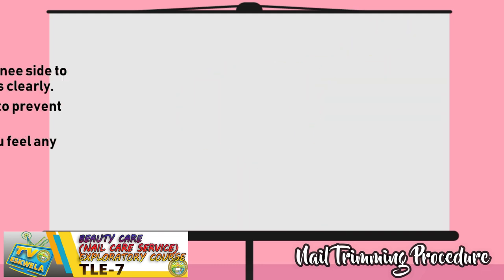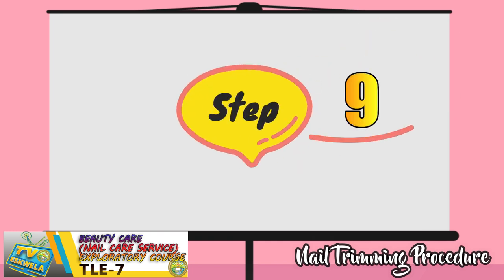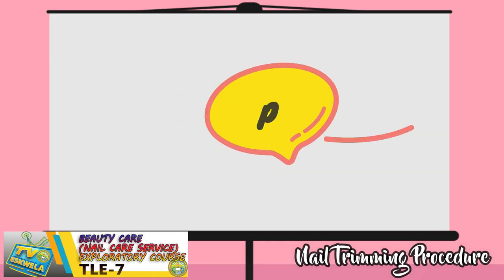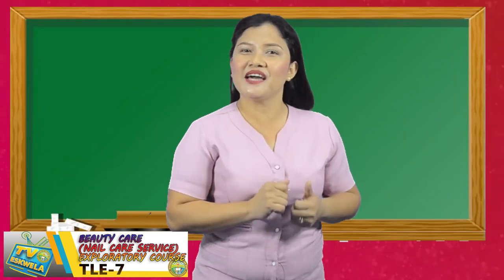Step eight: sit comfortably and crouch your knee to the side to easily reach and see the nails clearly. Be sure not to cut too deep to prevent scratches. Adjust the position of the nail cutter if you feel any discomfort. Step nine: after cutting your nails, use a nail file to smooth any rough surface on your nails. When you file, do it on a tilt from the corner of the nail going down. Step ten: apply some moisturizer on your hands to keep the cuticles moisturized and smooth. There you have it, class — the step-by-step procedure on how to trim your nails.